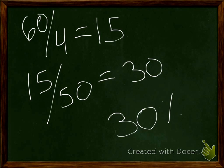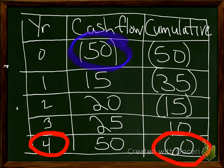One big disadvantage of ARR is the reliance on forecasting. Forecasting is basically an educated guess, and you're going to be wrong. Our cash flows gradually go up each year and then in year four it's huge — 50 million. There are a lot of assumptions going on with this, and those assumptions could be wrong. If year four turns out to be wrong, then that ARR of 30% could be very, very different. We're putting a lot into forecasting and those assumptions, which typically are wrong — hopefully wrong in a way that we're actually making more money.